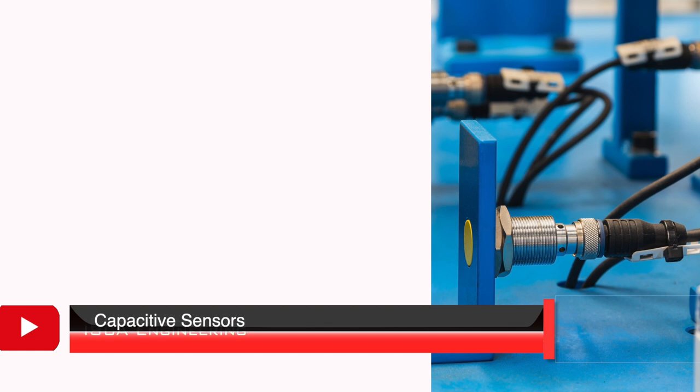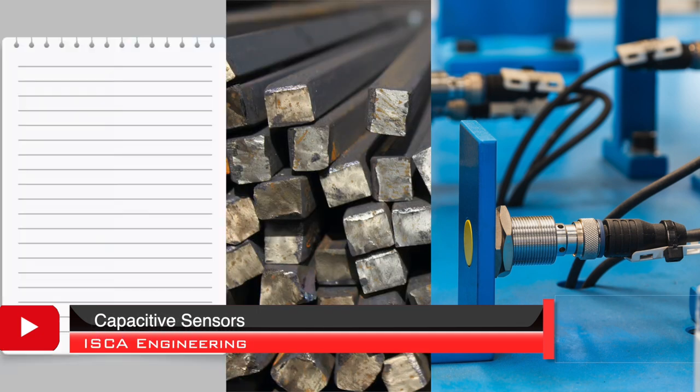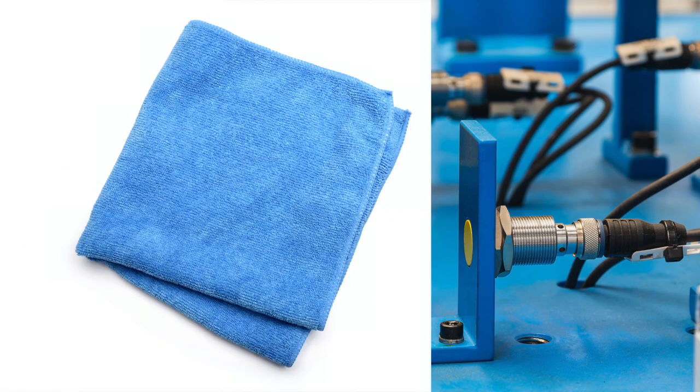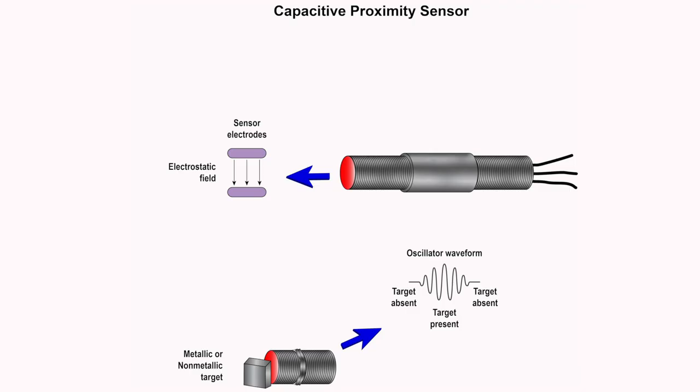Capacitive proximity sensors are capable of detecting metals as well as paper, glass, liquids, and cloths. Instead of an electromagnetic field being generated, this sensor produces an electrostatic field. They detect changes in the capacitance between the sensing object and the sensor.